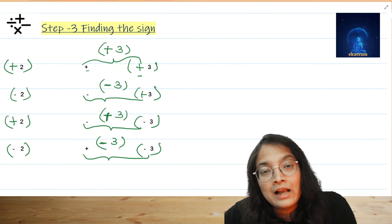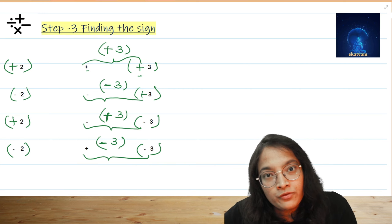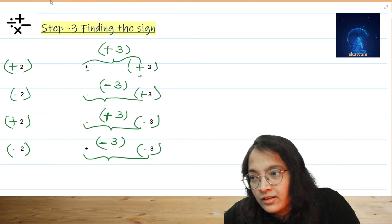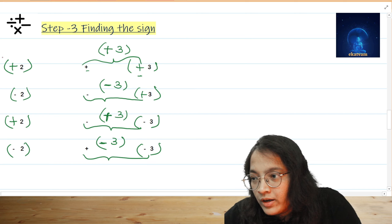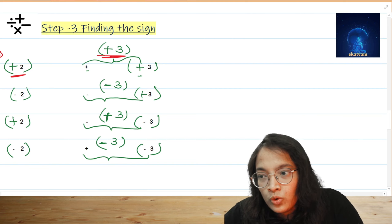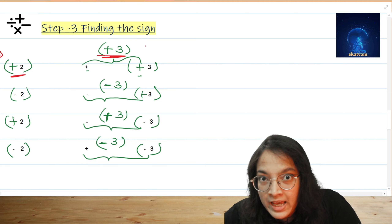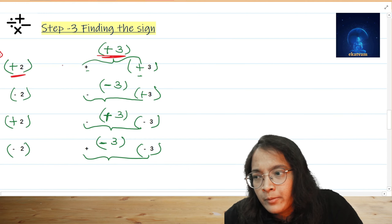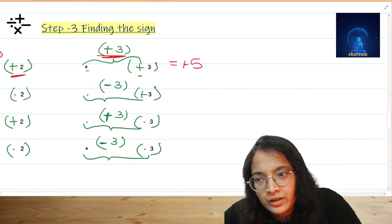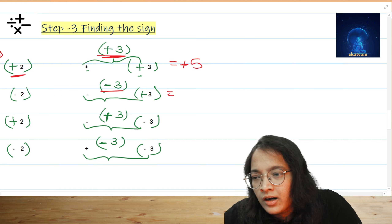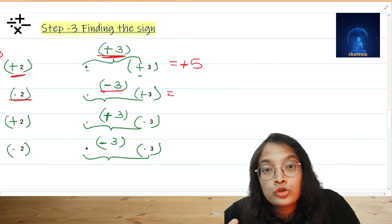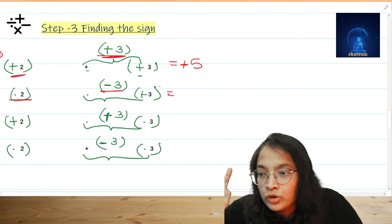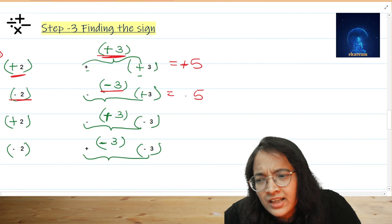Now we move to the fourth step, solving these equations. For the first example, we have plus 2 and plus 3. Both signs are the same, so we add the numbers: 2 plus 3 is 5, and since both signs are the same, we keep the sign as plus, giving plus 5. For the second example, minus 2 and minus 3 — both signs are the same, so add the numbers: 2 plus 3 is 5, carry the sign as minus, giving minus 5.